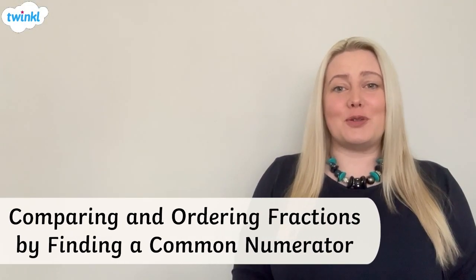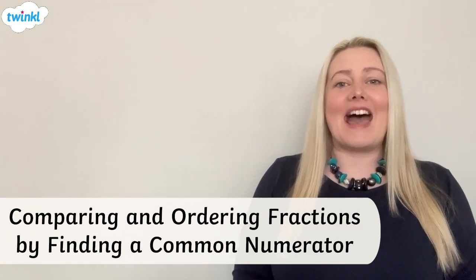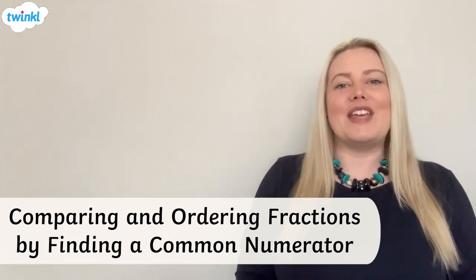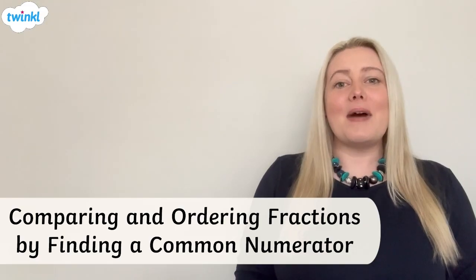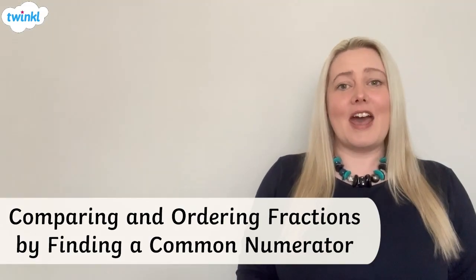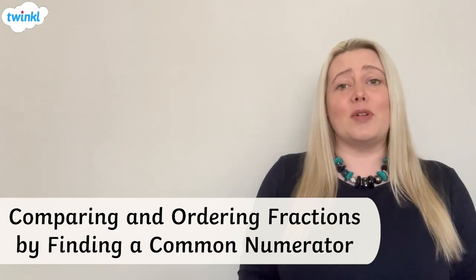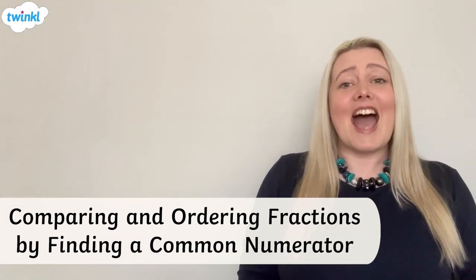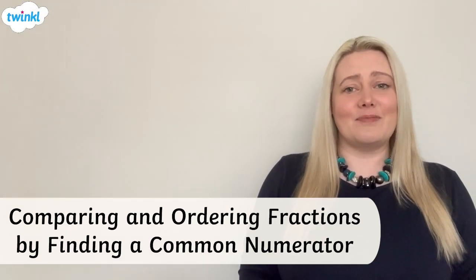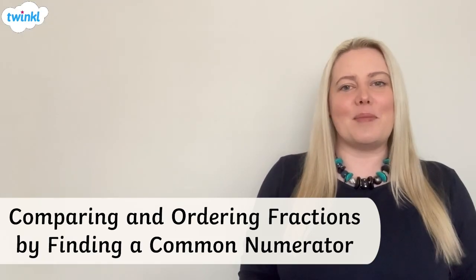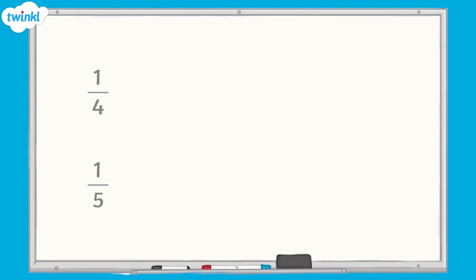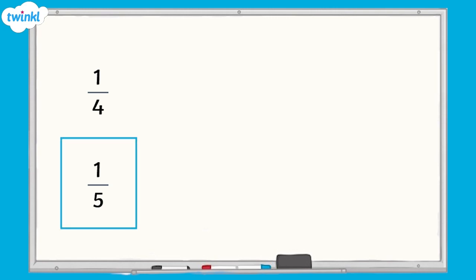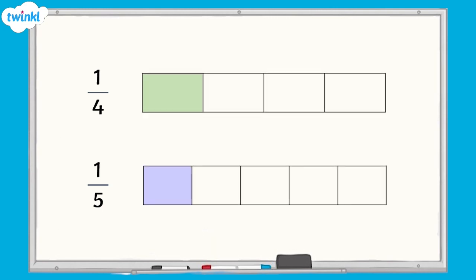This video is here to help you use the numerator to compare and order fractions. We can compare and order fractions by finding a common denominator. However, sometimes it's easier to find a common multiple of the numerators and compare fractions this way. Here we have two fractions with the same numerator: 1 quarter and 1 fifth. If we represent them using bar models of the same size, we can see that 1 quarter is greater than 1 fifth.